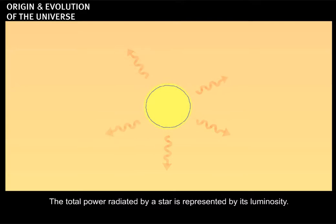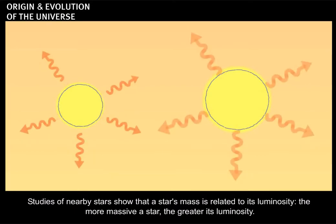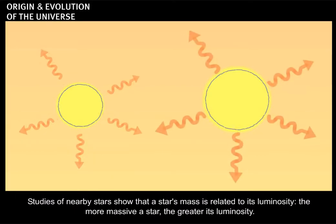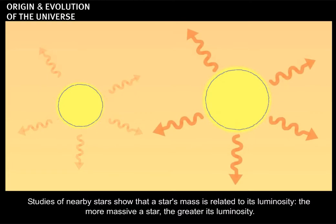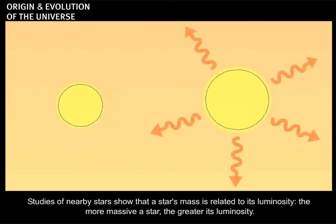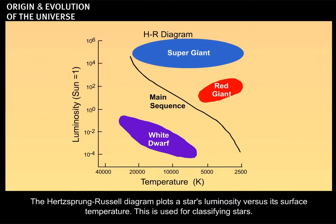The total power radiated by a star is represented by its luminosity. Studies of nearby stars show that a star's mass is related to its luminosity. The more massive a star, the greater its luminosity. The Hertzsprung-Russell diagram plots a star's luminosity versus its surface temperature. This is used for classifying stars.